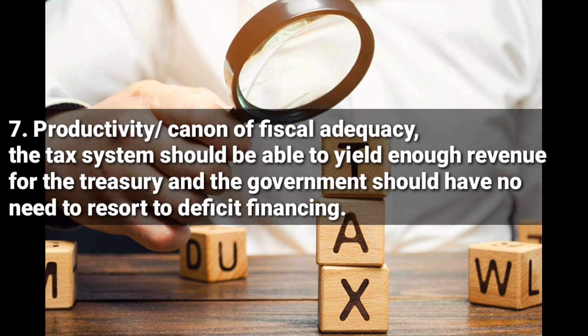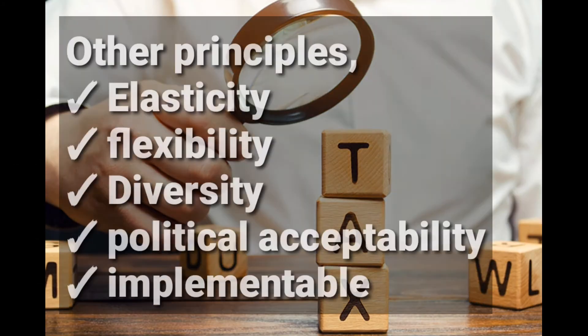Productivity is another principle of taxation, also known as the canon of fiscal adequacy. This one states that the tax system should be able to yield enough revenue for the treasury, and the government should have no need to resort to deficit financing. They should be able to get enough money from the tax system so that they don't resort to borrowing from developed countries. This is a good principle to follow in a developing economy.